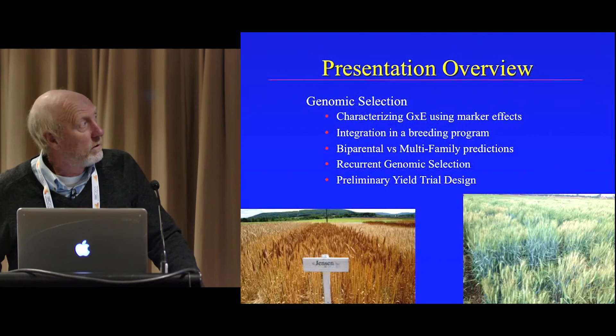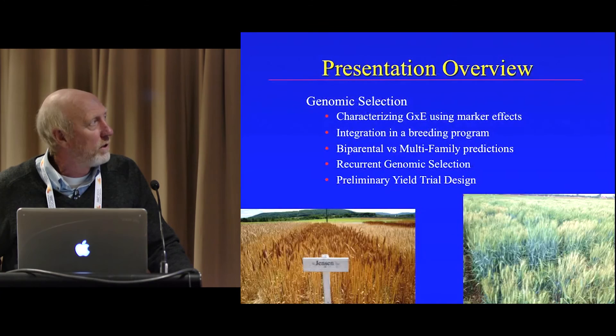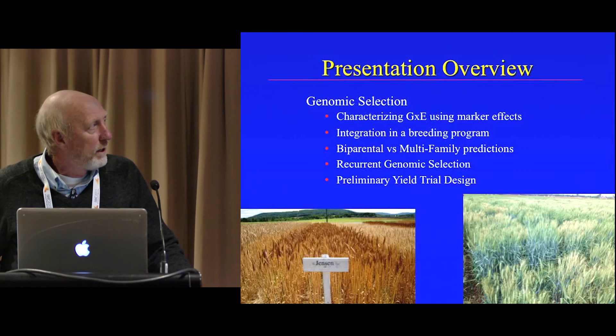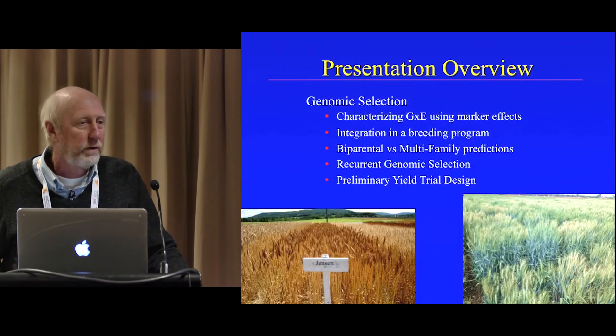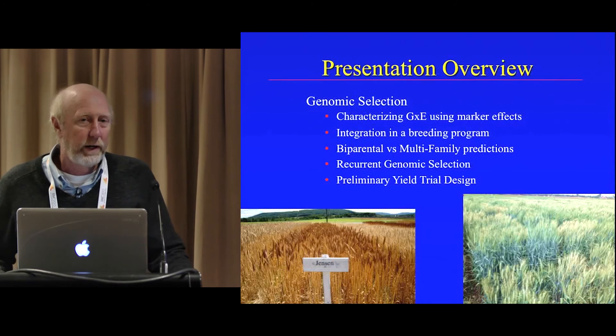I'm going to first give an introduction to what genomic selection is about. A little bit about how we use whole genome genotyping to deal with genotype by environment interactions. A little bit about how I visualize GS being integrated in a breeding program — the differences between the biparental versus open multifamily strategy. Some of Jessica's work on recurrent genomic selection for adult plant resistance. I was going to present some work on using whole genome genotyping for yield trials, but I'm afraid that's going to push it too long, so I'm going to leave that part off.